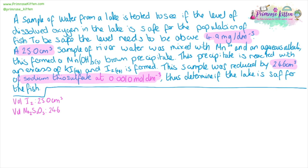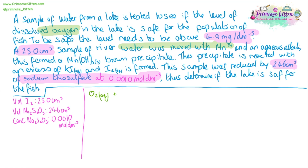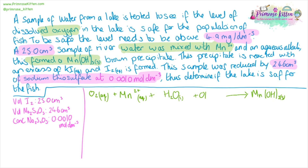The first thing I'm doing is pulling all the information I need out of the question. We are looking for the dissolved oxygen — so oxygen is what we are solving for. This 25 cm³ of water is mixed with Mn²⁺, and we know we are going to get a product of manganese hydroxide, which is the brown precipitate. Because it's river water we'll also have water in our reaction, and the aqueous alkali tells us that we also need alkali added in there.